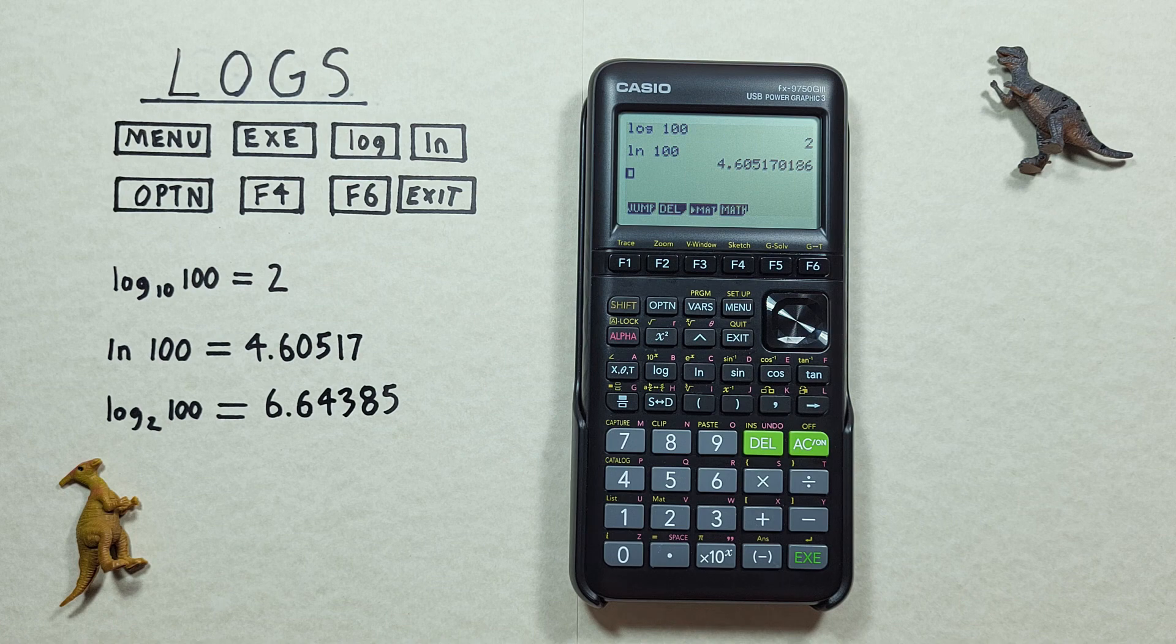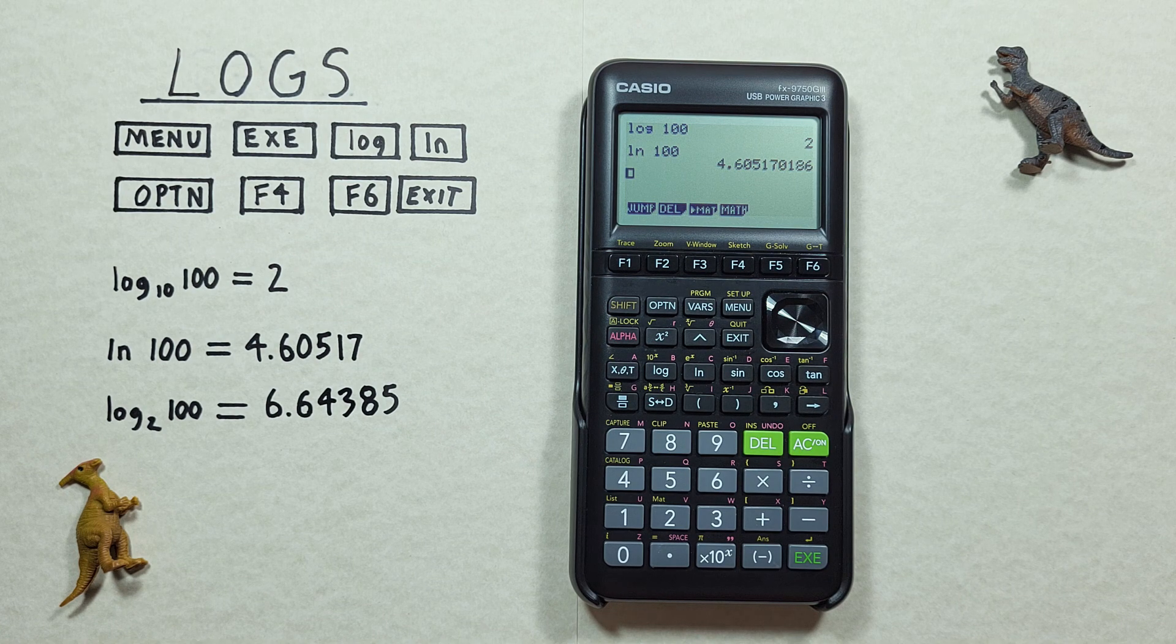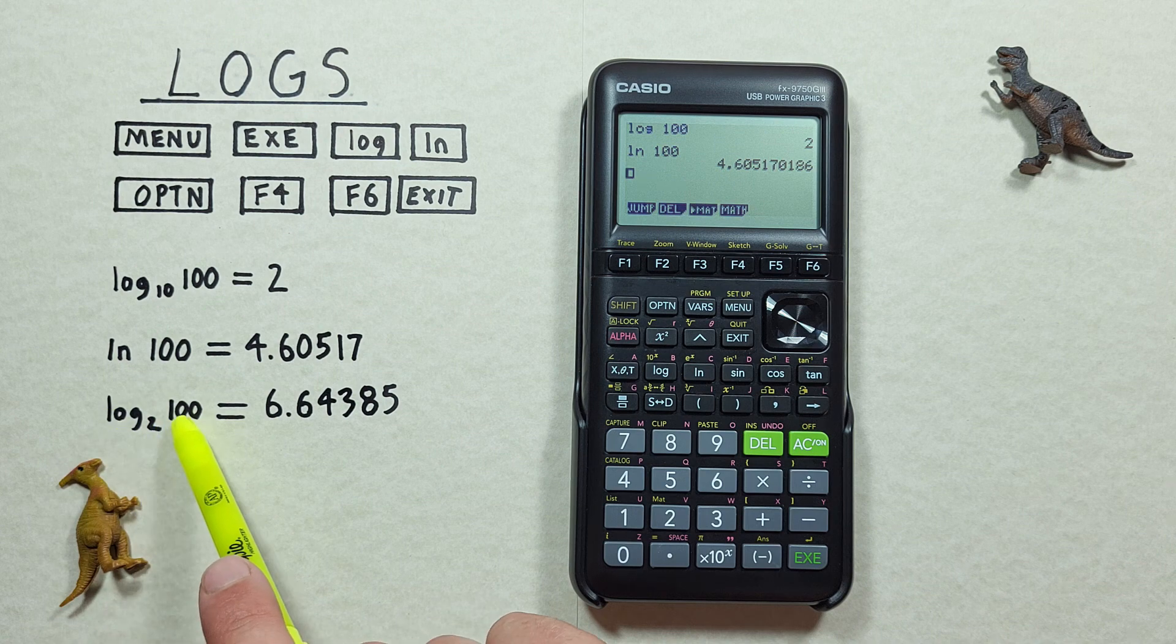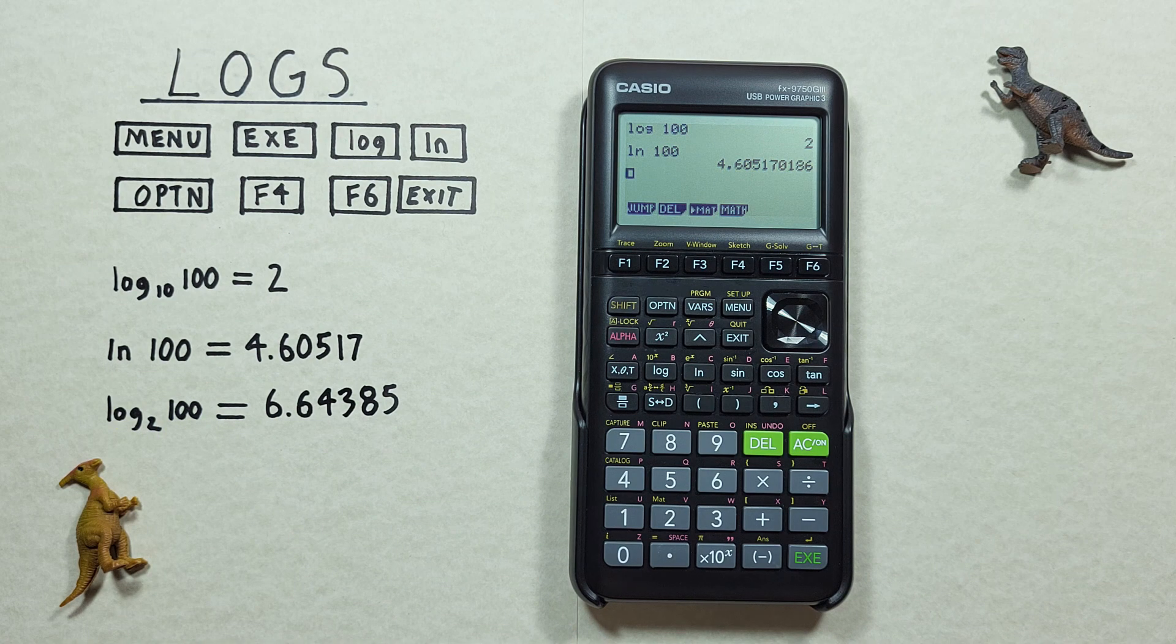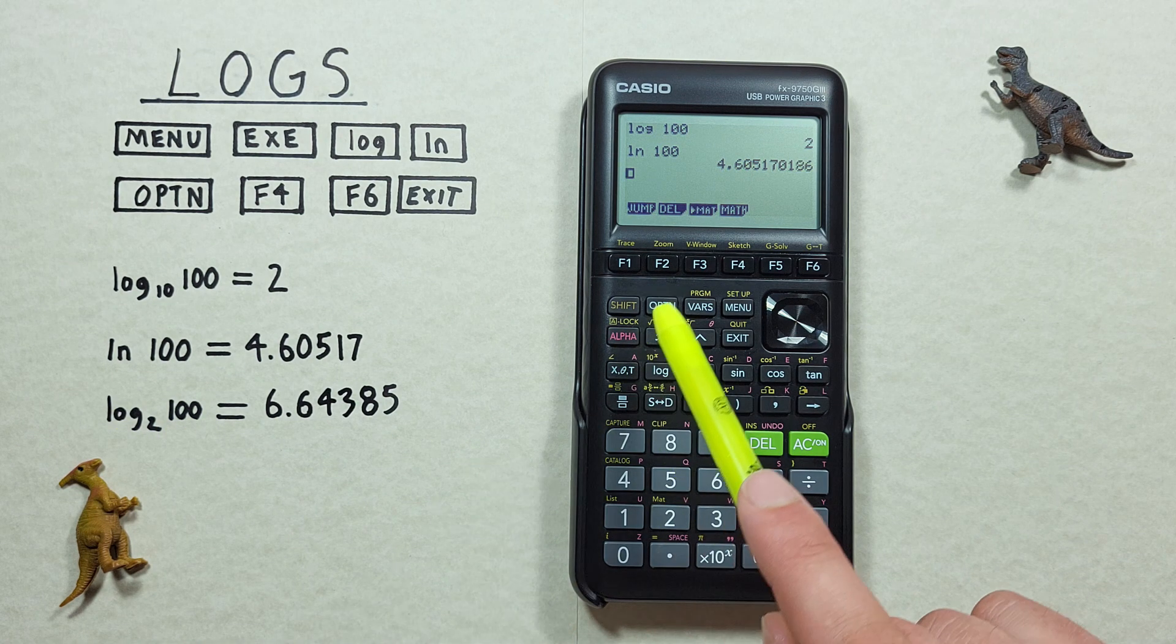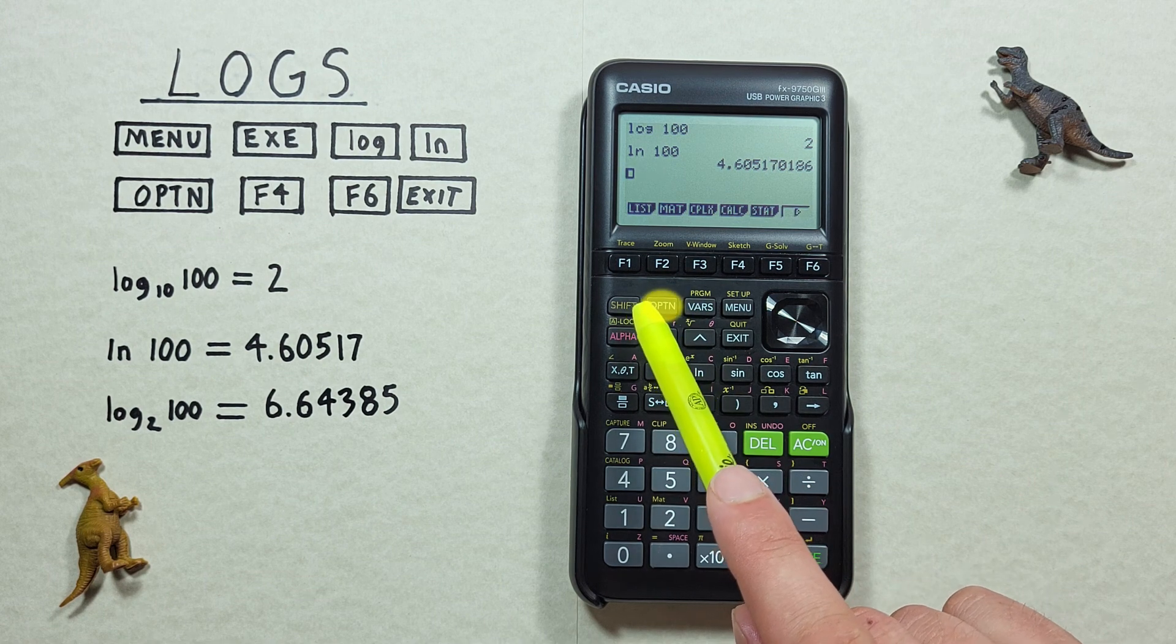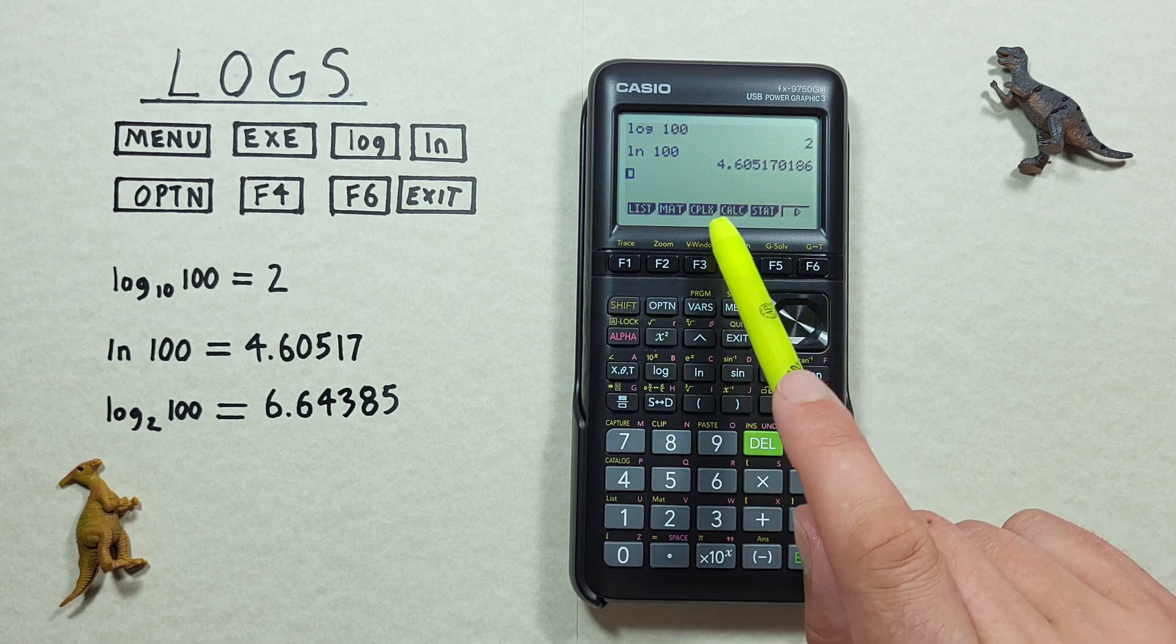What if we want to find a log base that isn't log base 10, or natural log, like, for example, log base 2 of 100? To do that, we start by pressing the OPTION key, and then the F4 key for the CALC option.